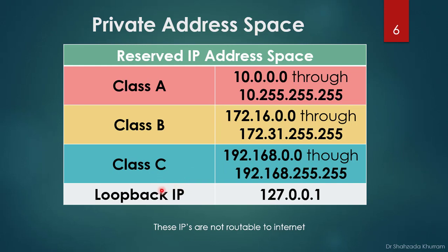In Class C, the private range is 192.168.0.0 through 192.168.255.255. There is also one special IP — 127.0.0.1 — used for loopback. Whenever you want to check your own network card, you ping 127.0.0.1 and if you get a reply, your card is working. All these private IPs are not routable to the internet. All remaining IPs are public and routable to the internet, and you need to buy them — normally your ISP provides them.